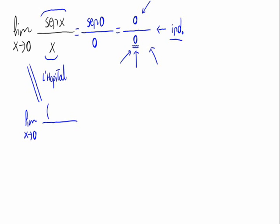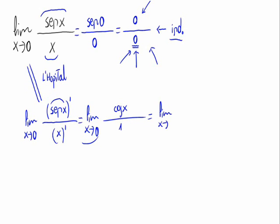So, the numerator would be the derivative of sin x and the denominator the derivative of x. This is the limit when x approaches 0 of cosine of x divided by 1. This is the limit when x approaches 0 of cosine of x.